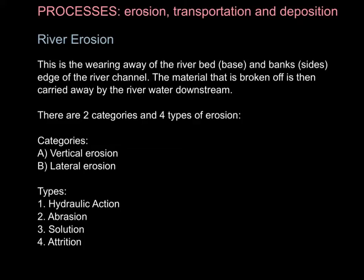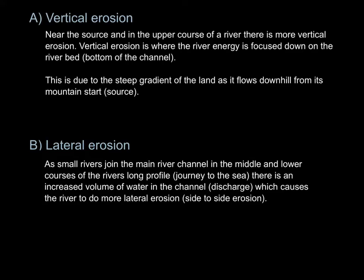The categories are vertical and lateral erosion. Vertical erosion happens near the source in the upper course of the river. This is where the river energy is focused downwards on the river bed, due to the river starting in mountains as a steep gradient. All the focus of the river's energy is on its bed and moving down. This is where we get V-shaped valleys in the upper course.